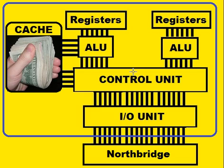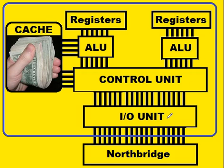You can say that the control unit manages all the activity that goes on internal to the CPU unit — it is the manager — while the I.O. unit is responsible for sending and receiving.